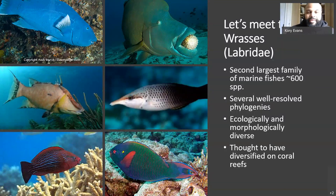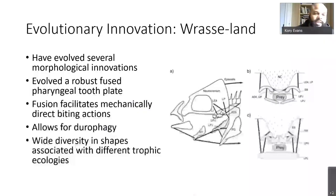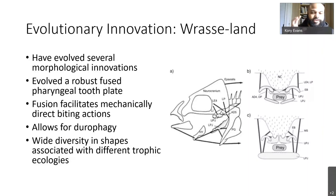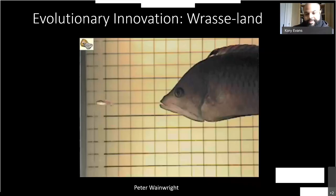The teleost group we'll be talking about today are the wrasses, family Labridae — a very charismatic, mostly marine fish group with about 600 species. They're distributed across tropical reefs and some higher latitudes, the second largest family of marine fishes, and fairly well understood ecologically in terms of diet and habitat. One of their more popular evolutionary innovations is pharyngognathy — a second set of jaws evolved in their throat, kind of like the alien, which allows them to crush hard prey like clams and snail shells.